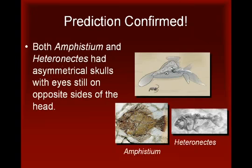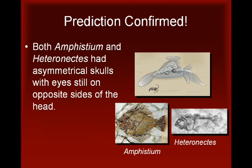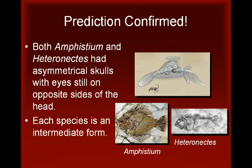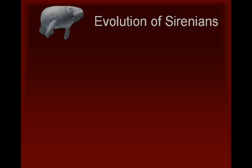This prediction was confirmed by the identification of fossils that are the most primitive known flatfishes. These specimens, known as Amphistium and Heteronectes, were found in European limestone deposits dating back 50 million years. They show evidence of slightly asymmetrical skulls, with eyes still on opposite sides of the head. Each of these specimens represents a predicted intermediate form between the peculiar eye arrangement in living flatfishes and the arrangement found in other fishes.